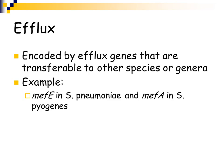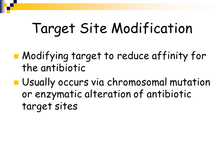An example of acquired efflux is the MEF-E gene in Streptococcus pneumoniae and the MEF-A gene in Streptococcus pyogenes. Some bacteria will modify the target site so the antimicrobial agent won't be able to recognize or bind to that target site. Usually this happens through acquired chromosomal mutations in the bacterial genome.